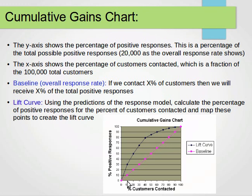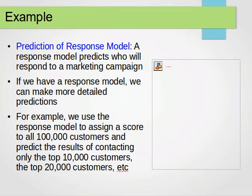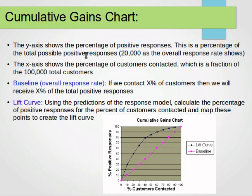Looking at the curve: at 10% of customers contacted (top 10,000), we get 6,000 responses — 6,000 over 20,000 is 30%. For the top 20% we get 10,000 responses, which is 50%. The pink line is our baseline and the black line is our lift curve. For the baseline, if we contact any percentage of customers we get the same percentage of responses — contact 10% and get 10%, contact 20% and get 20%, and so on.